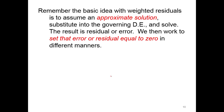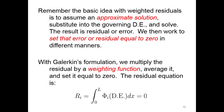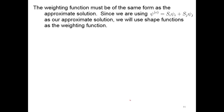The basic idea is we want to assume an approximate solution first — what do we think the solution will look like — and substitute that into the governing differential equation. The result has some residual error, and we work to drive that to zero. In the Galerkin formulation, we multiply the residual by a weighting function and average it to equal zero. The weighted residual function takes the form of the assumed solution, and we integrate across the domain in dx to get our residual, set equal to zero. The weighting function must be the same form as the approximate solution, so we use the linear shape function.